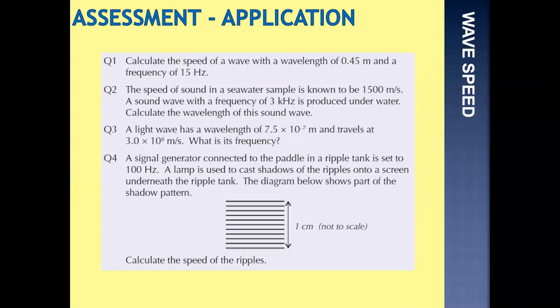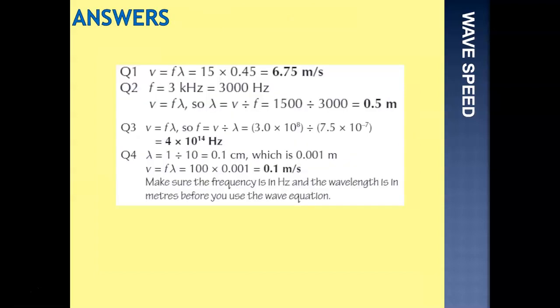Question two, the speed of sound in a seawater sample is known to be 1500 metres per second. And a sound wave with a frequency of 3 kilohertz is produced underwater, calculate the wavelength. So in this case, frequency is 3 kilohertz, that makes 3,000 hertz. Wavelength, if we use our equation triangle, would be speed over frequency, so that's 1500 divided by 3000, giving us a wavelength of 0.5 metres.